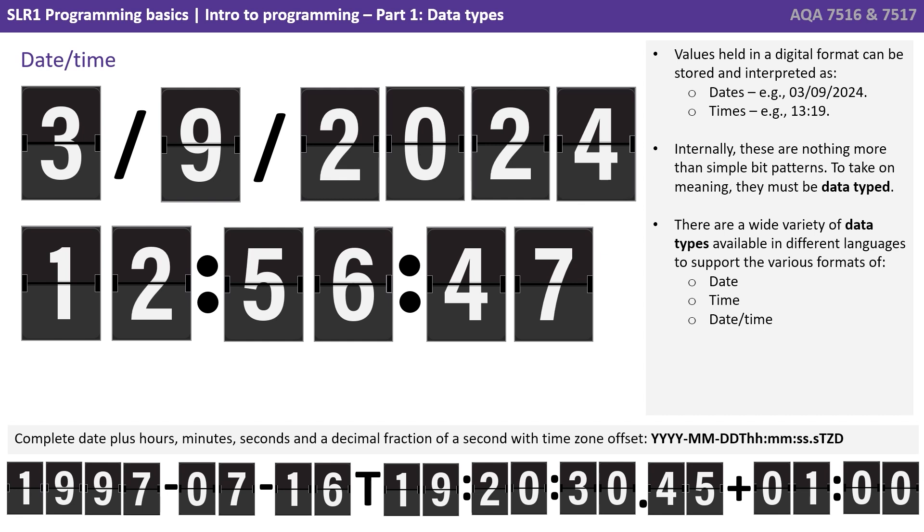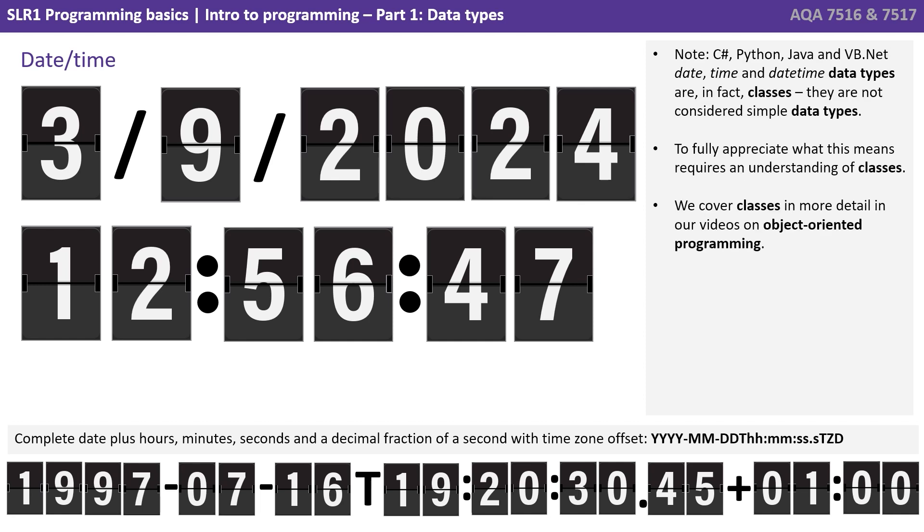Next, we have the date time data type. Values held in a digital format can be stored and interpreted as both dates and also times. Now internally, these are nothing more than simple bit patterns. To take on the meaning of a date and or time, they must be data typed. There are a wide variety of data types available in different languages to support the various formats. These typically fall under date, time and what we call date time. Note that C-sharp, Python, Java and VB.net date, time and date time data types are in fact classes. They're not actually considered simple data types. To fully appreciate what this means will require an understanding of classes. And we will cover classes in more detail in our video on object orientated programming.